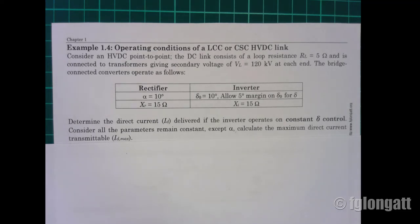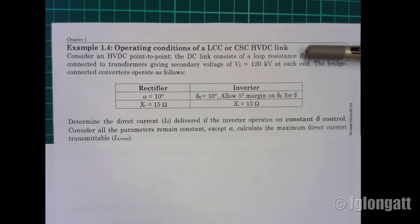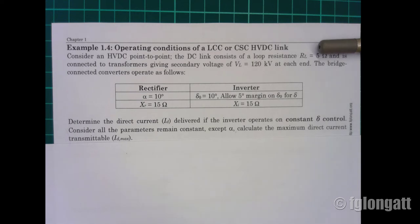This is example 1.4, one of my favorites, and we are calculating operating conditions for a line-commutated converter or current source converter HVDC link. Imagine we have an HVDC point-to-point link with a resistance R_L that represents the loop resistance, connecting to a transformer giving a secondary voltage V_L of 120 kV at each end.